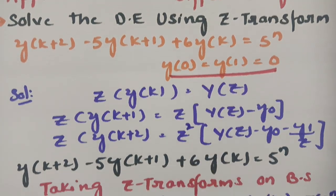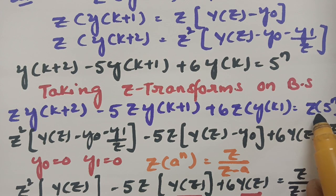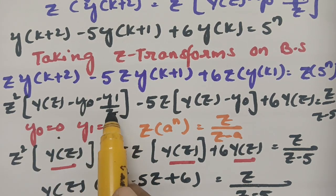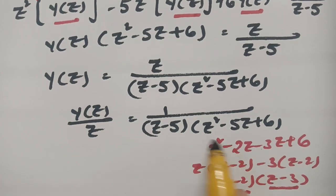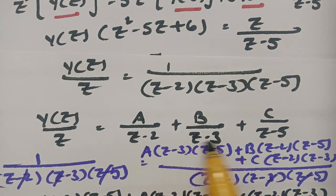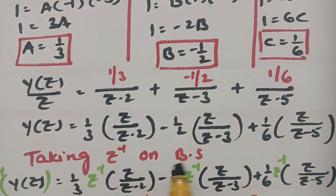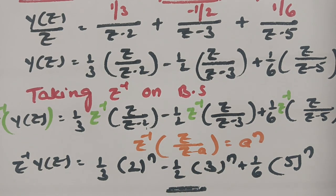In summary, to solve the difference equation we used the Z-transform conditions, substituted the initial conditions y(0) = 0 and y(1) = 0, factored the denominator as (z - 2)(z - 3), resolved into partial fractions to get A, B, C, and applied the inverse Z-transform to arrive at the solution: y(k) = (1/3)·2^n - (1/2)·3^n + (1/6)·5^n. Please practice well and share with your friends.